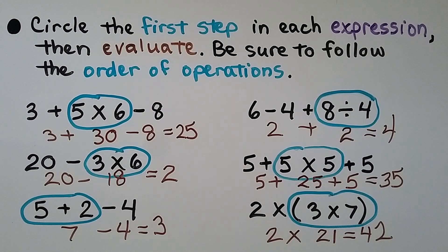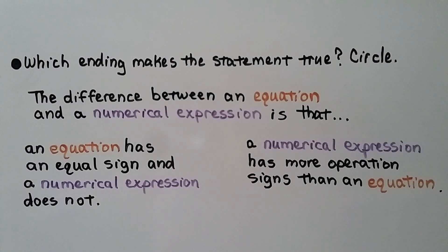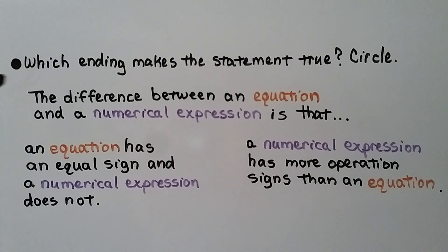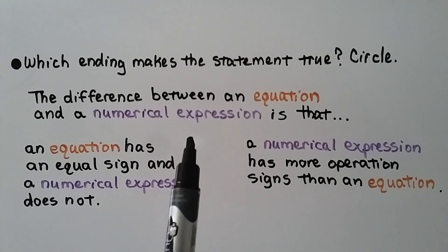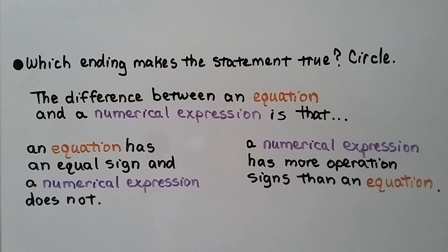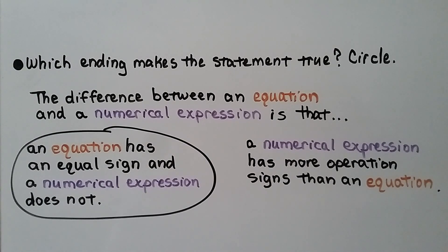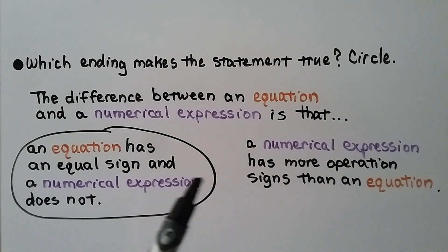Which ending makes the statement true? Option A: the difference between an equation and a numerical expression is that an equation has an equal sign and a numerical expression does not. Option B: a numerical expression has more operation signs than an equation. The correct answer is Option A — an equation has an equal sign and a numerical expression does not. An equation can have just as many operation signs as a numerical expression, but the key difference is the equal sign.